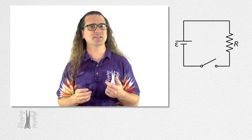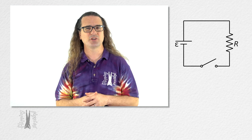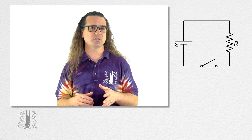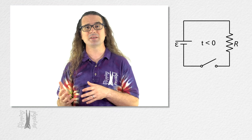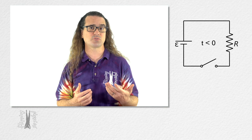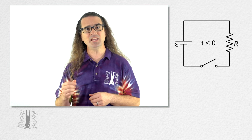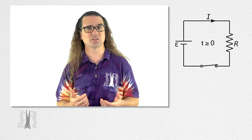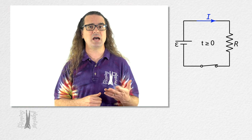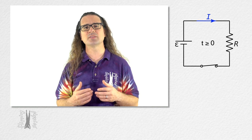Our review of inductance starts with a basic circuit with a battery, a resistor, and a switch. Before time t equals zero, the switch in the circuit is open and zero current flows through the open loop. At time t equals zero, the switch is closed and remains closed. A current i, which is clockwise from this perspective, is now in the circuit.